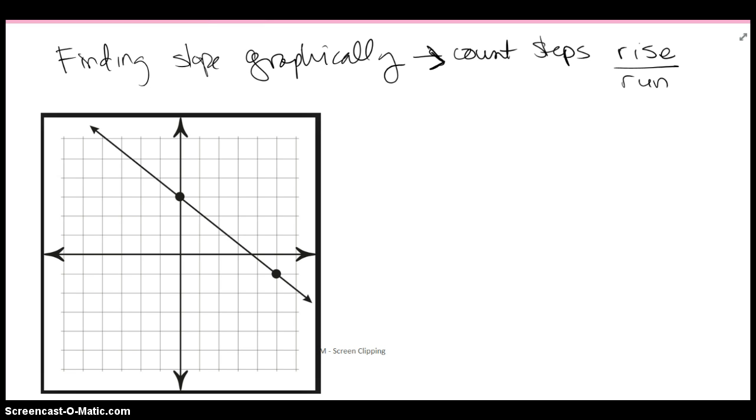We're going to look at finding the slope graphically. If I'm looking at this graph, I pick two locations that I can read off pretty well, which is this ordered pair at (0, 3) and this ordered pair at (5, -1). I'm not going to pull out those ordered pairs, I'm just going to start at one location and walk over to the next location counting my steps.